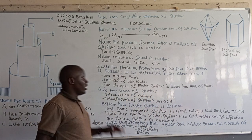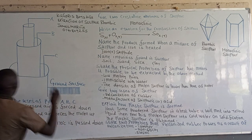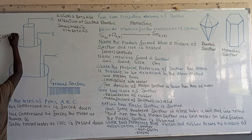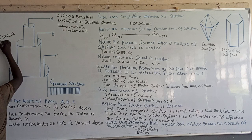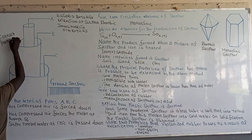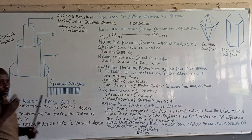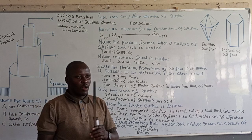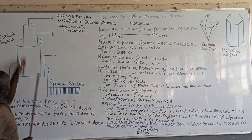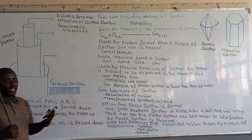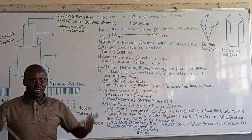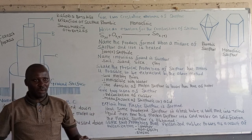In my diagram, it shows the three concentric pipes. The process is called the Frasch process. This process of extraction of sulfur is called the Frasch process, and it normally follows three concentric pipes. We have the innermost pipe, where hot compressed air at atmospheric pressure is forced through it.